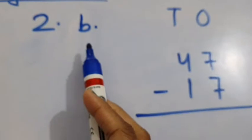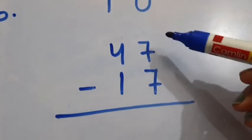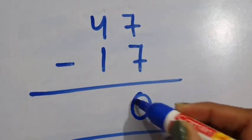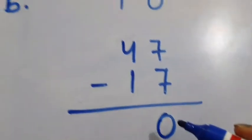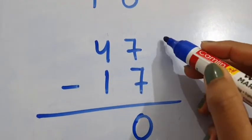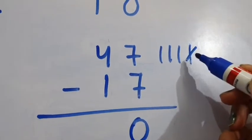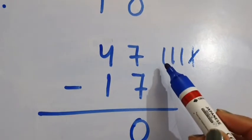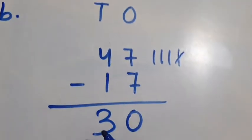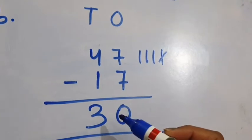Question 2B: 47 minus 17. See the 1's column — 7 minus 7 is 0. Now see the 10's column: 4 minus 1. Draw 4 lines and out of these 4 lines, remove 1 line. So 3 lines are remaining. We will write 3 in the 10's column in the answer box. So 47 minus 17 is equal to 30.